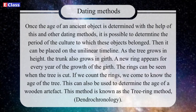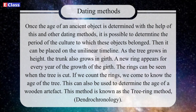Once the age of an ancient object is determined using C-14 or other dating methods, it is possible to determine the period of the culture to which these objects belonged, and then it can be placed on the unilinear timeline. As a tree grows in height, the trunk also grows in girth, and a new ring appears for every year of growth. The rings can be seen when the tree is cut. By counting the rings, we can know the age of the tree. This method, known as the tree ring method or dendrochronology, can also be used to determine the age of wooden artifacts.